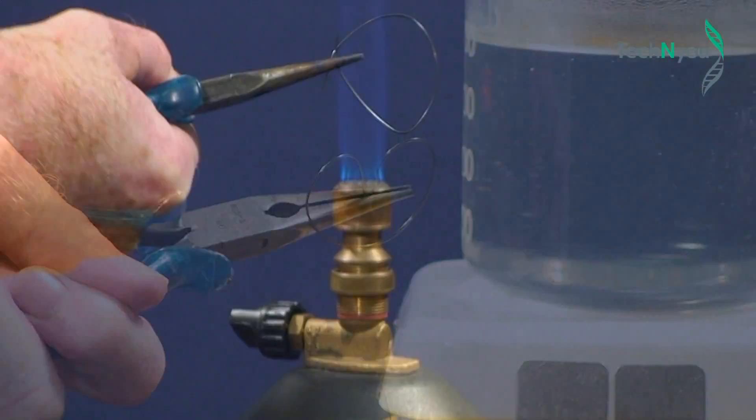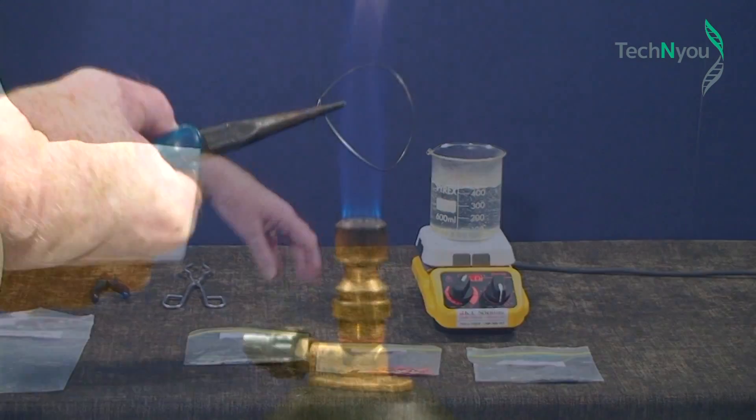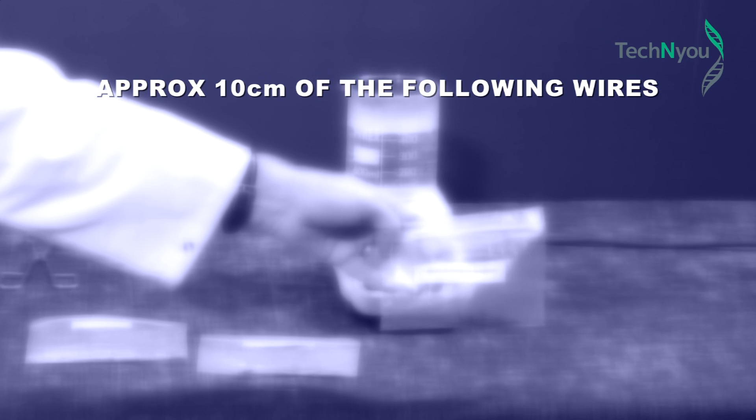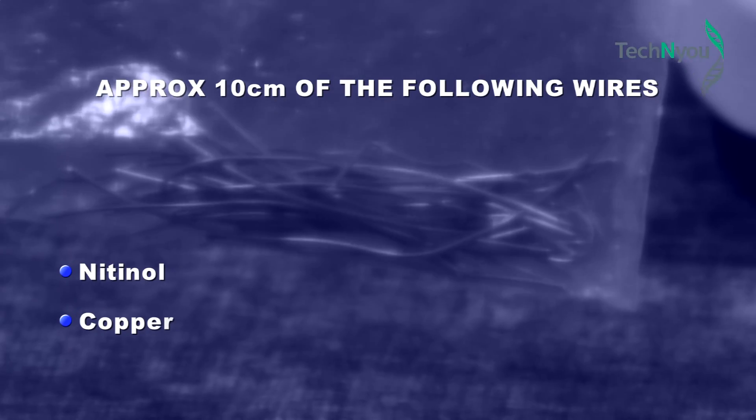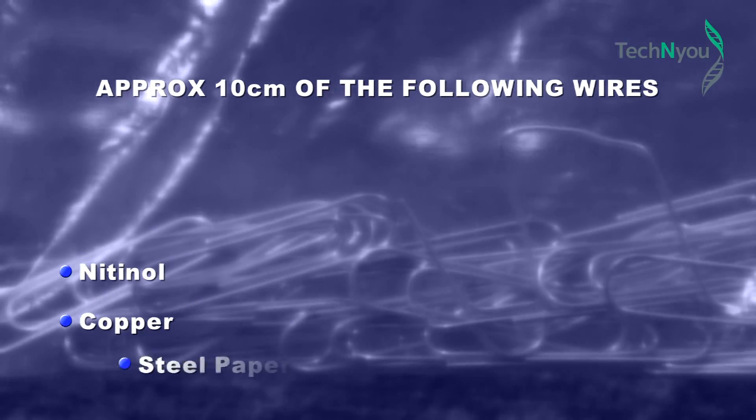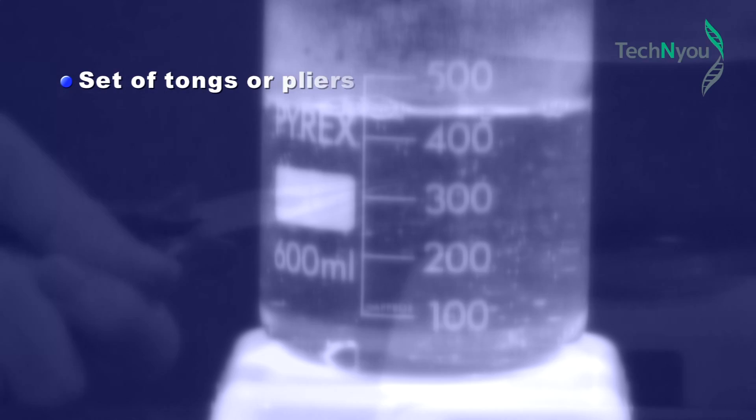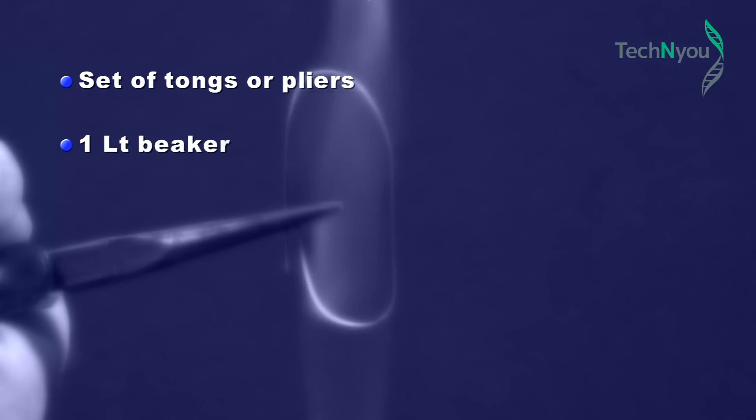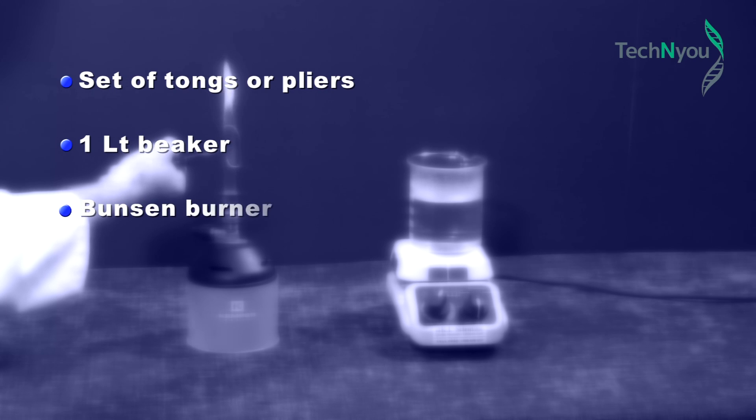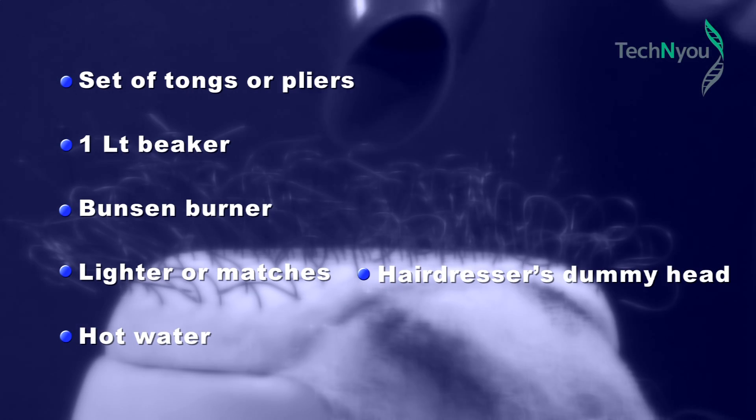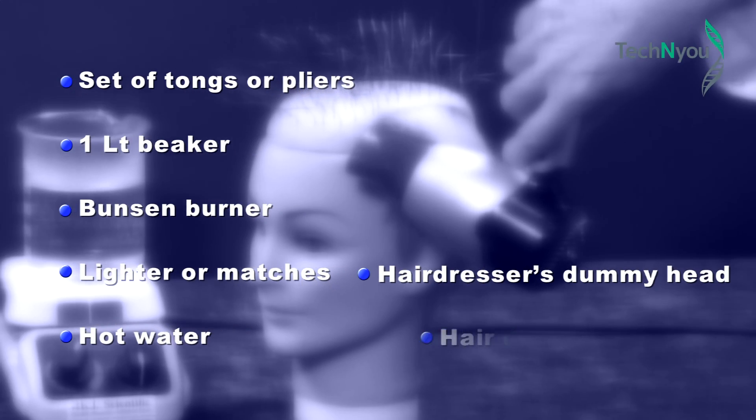This is a very simple experiment to do. We need only a few items of equipment: approximately 10 centimeters of each of the following wires - Nitinol, copper and a steel paper clip; a set of tongs or pliers; a one liter beaker; a Bunsen burner; lighter or matches; hot water; a hairdresser's dummy head wired with Nitinol as shown; and a hairdryer.